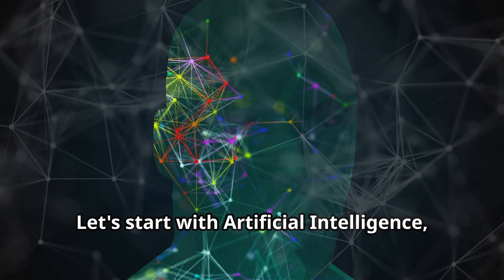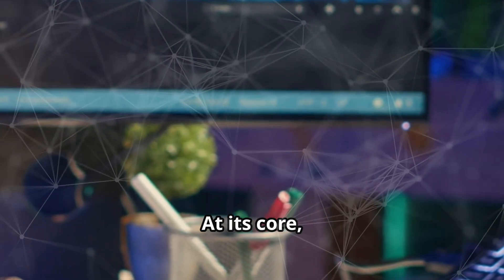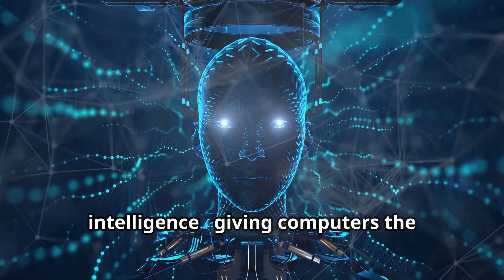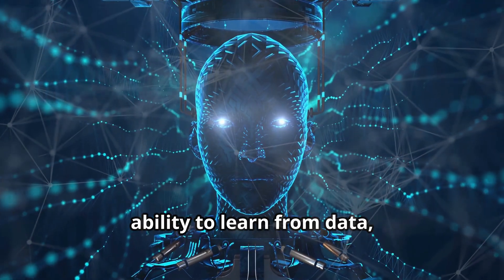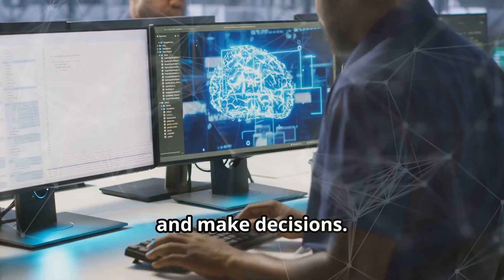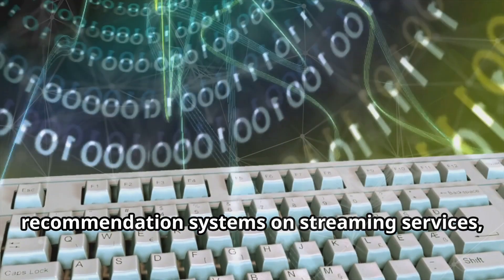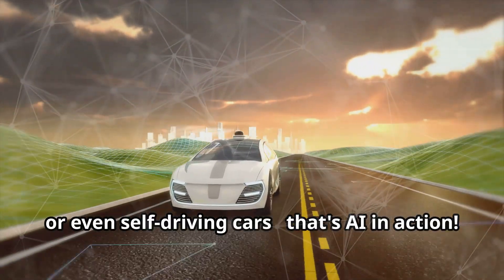Let's start with artificial intelligence or AI. At its core, AI is all about making machines smart. We're talking about simulating human intelligence, giving computers the ability to learn from data, reason through problems, and make decisions. Think about your smartphone assistant, recommendation systems on streaming services or even self-driving cars. That's AI in action.